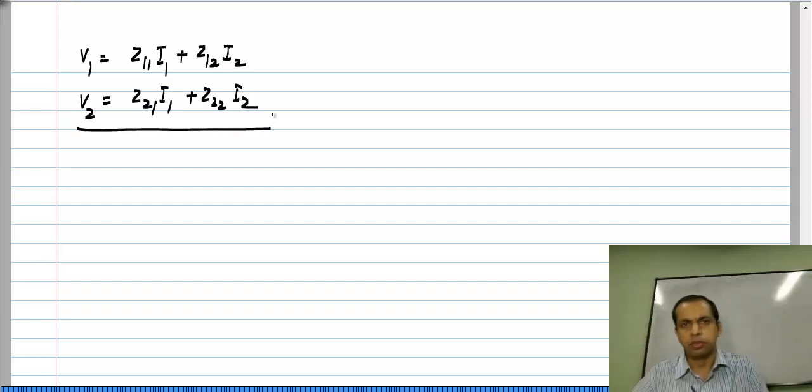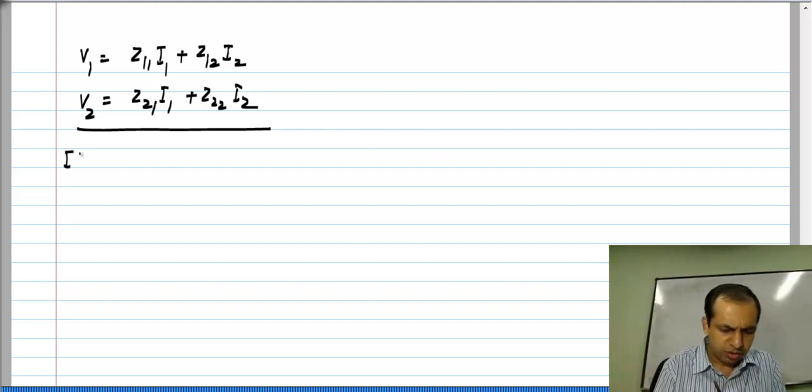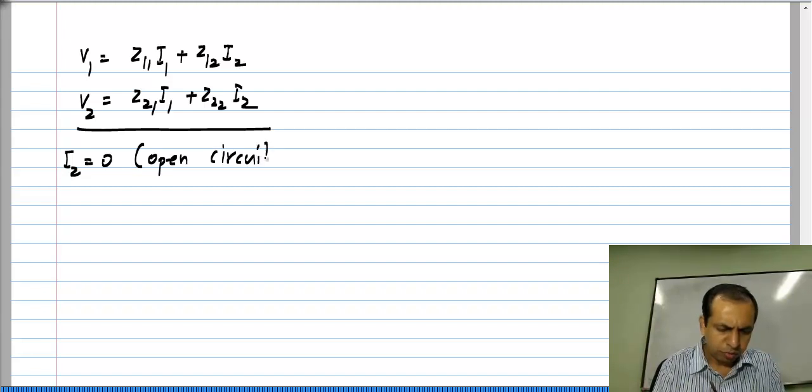Now, let us say you are given a network and you are asked to find the Z parameters. You need four measurements because you have four parameters and by taking four possible combinations of I1 and I2 you will get four equations, measure V1 and V2 for each case, you will get four equations and that is it. From that you can solve for the four parameters. Now, the convenient combinations to take are first of all you set I2 equals 0 that is your open circuit port number 2.